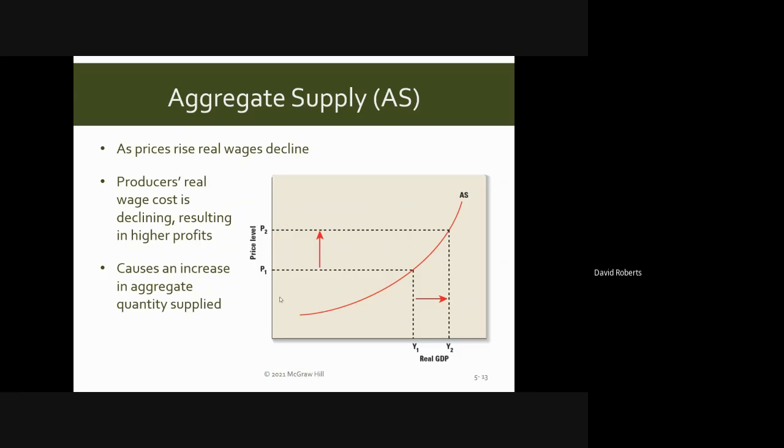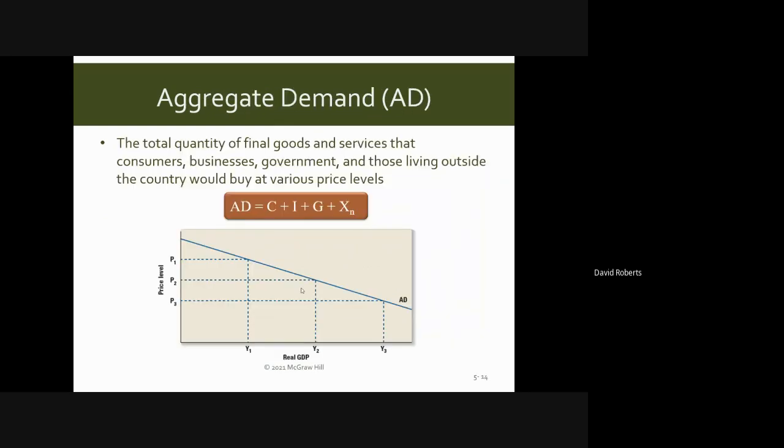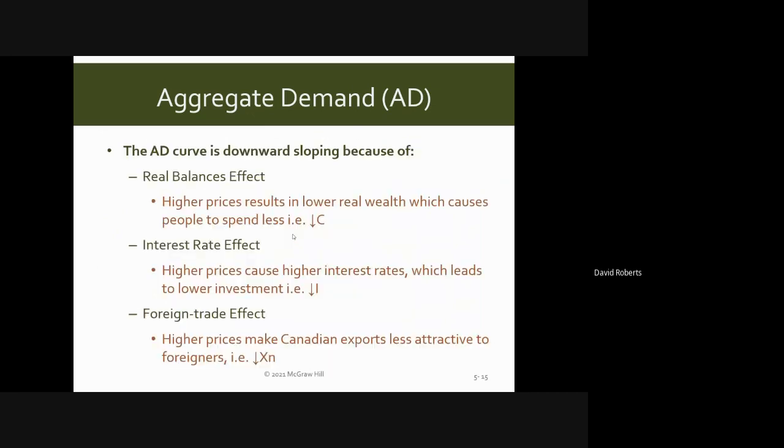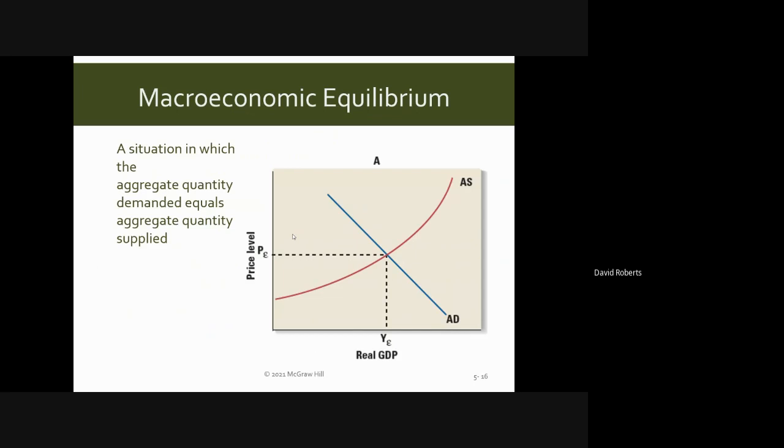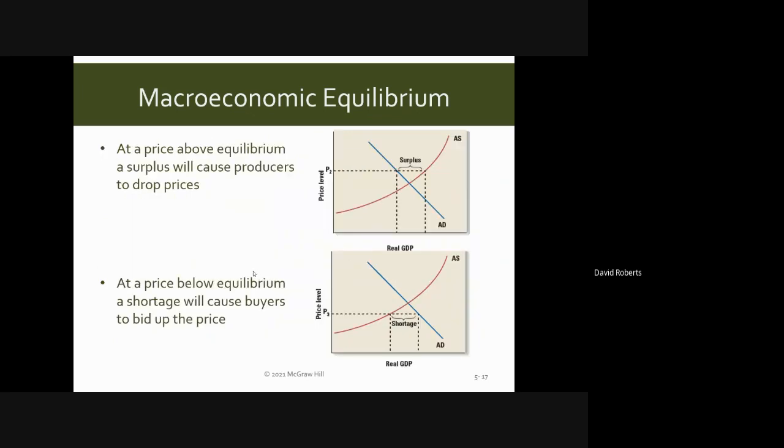Aggregate demand is consumption, investment, government spending, and net exports. We did this in an earlier chapter. In this particular case it's downward sloping, which we're used to with demand. Higher interest rates cause investment to go down, and higher prices make Canadian exports less attractive. The blue line is aggregate demand, the red line is aggregate supply, and then you get an equilibrium point between the real GDP and the price levels. This should be very familiar from your days in microeconomics.